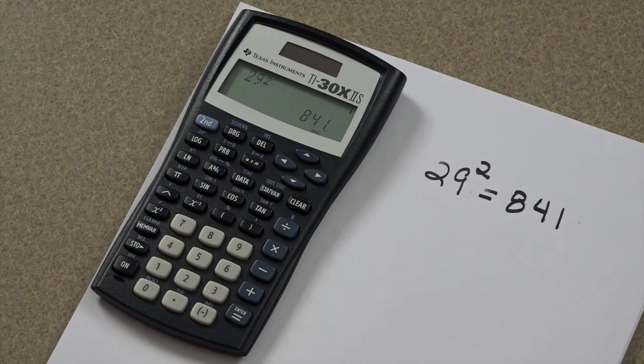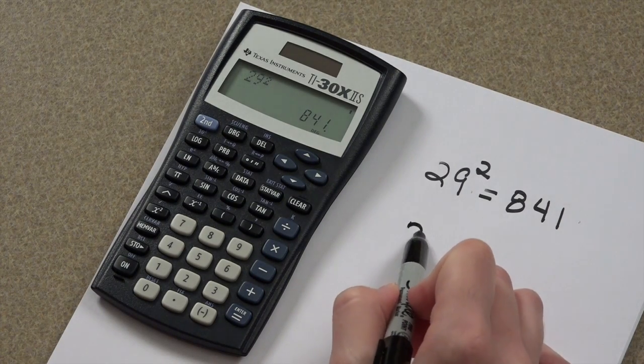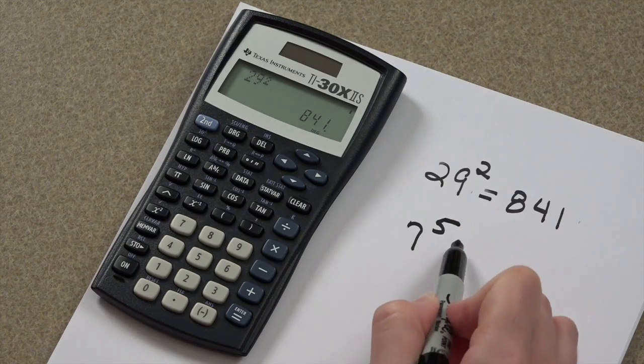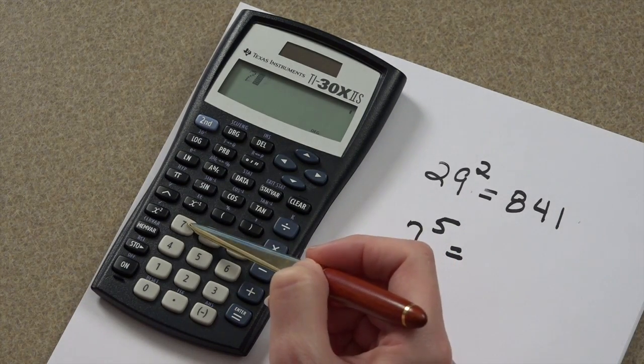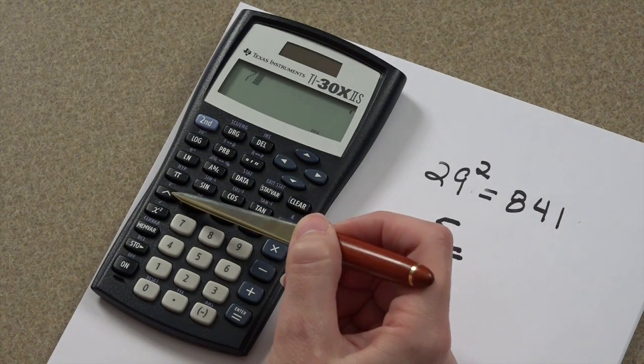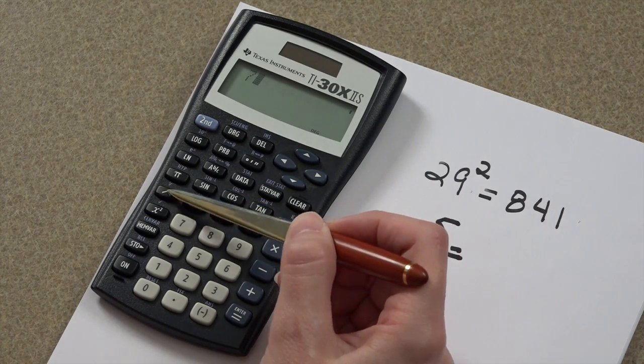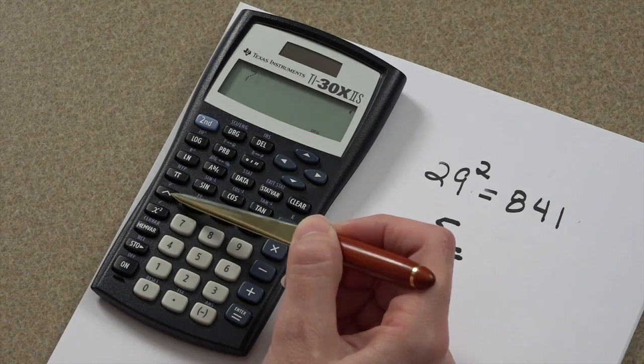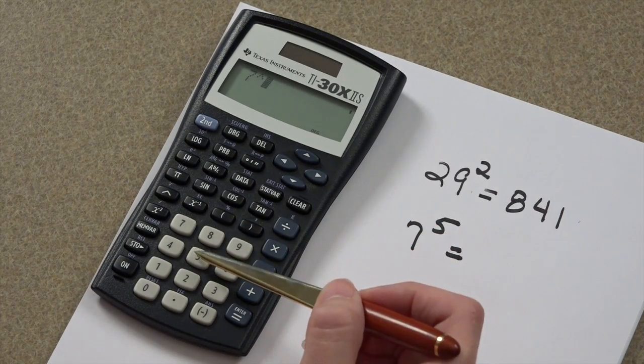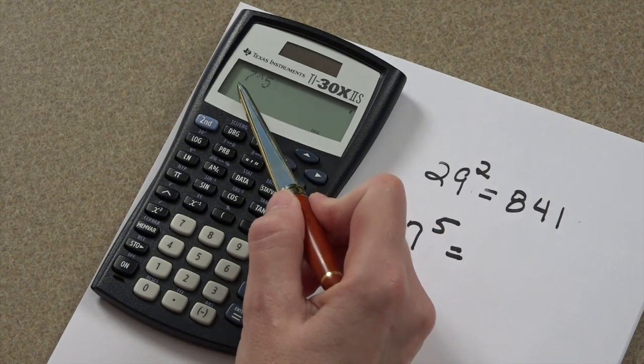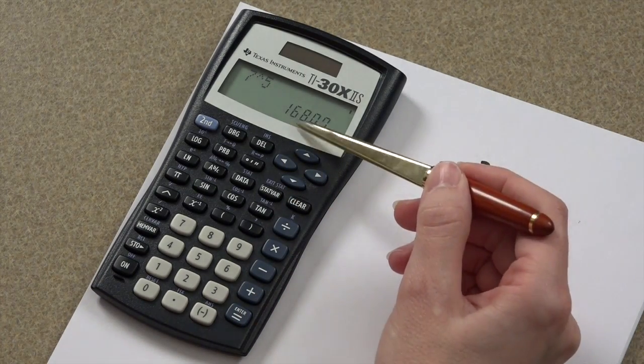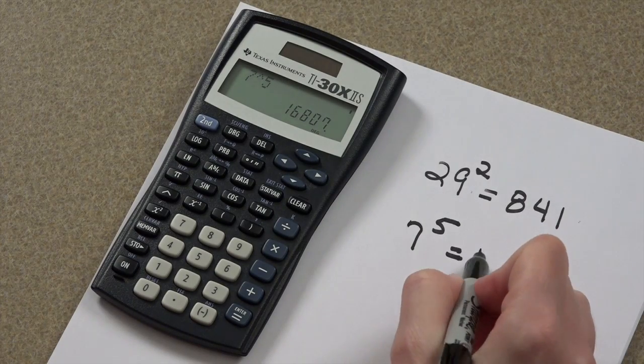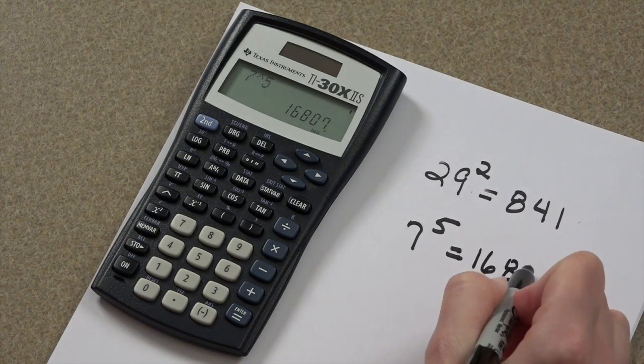Now, if you want to take a number like 7 to the 5th power, we'll press the 7 key, and then our caret button. The name of this button isn't just exponent, it's caret. So, 7 to the 5th power is 16,807. Man, I'm glad I didn't have to do that by hand.